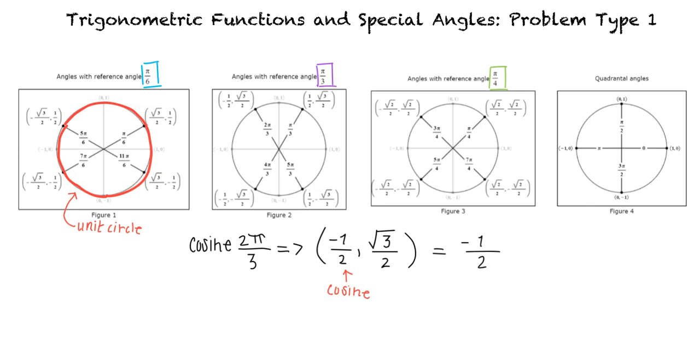Great work! So to solve trigonometric functions and special angles, we must first identify the reference angle. Then, we determine the coordinate point for the angle. And finally, we use either the x coordinate or the y coordinate for our final answer, depending on if the problem asks for sine or cosine of the angle.